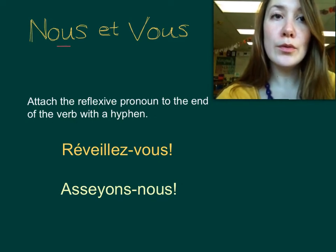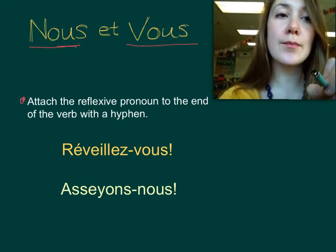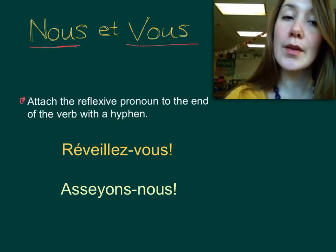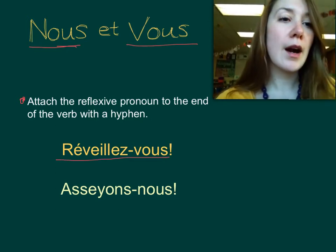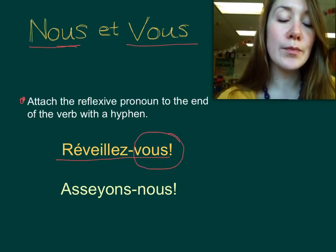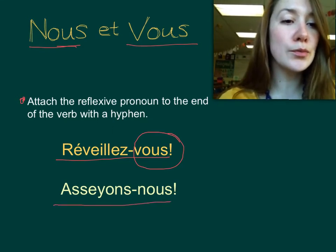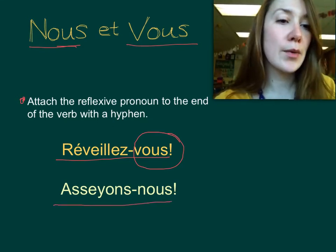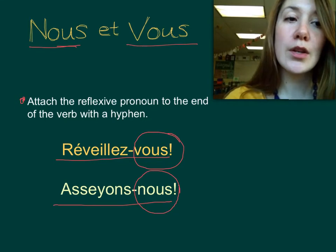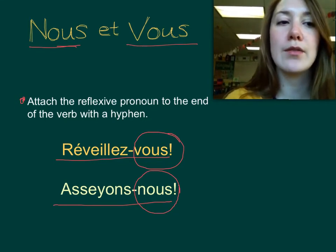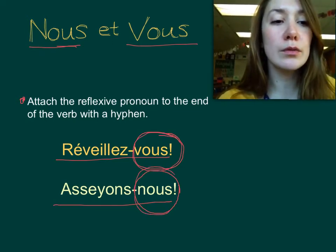For nous and vous, it's actually pretty simple. We're just going to attach the reflexive pronoun to the end of the verb with a hyphen. For example, réveillez-vous — wake up. Our reflexive pronoun is vous, so we put that at the end of our verb. Or asseyons-nous — let's sit down. We take our reflexive pronoun nous and attach it to the verb. You'll notice that we're not using our subject pronouns nous and vous, so vous only appears once and nous only appears once.